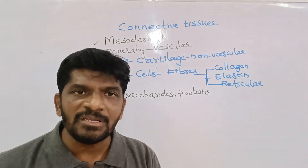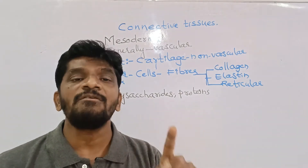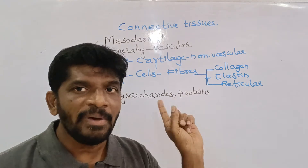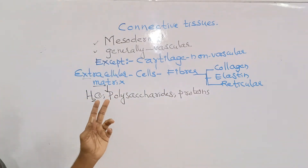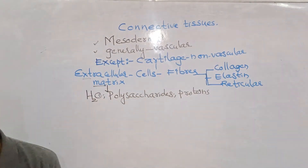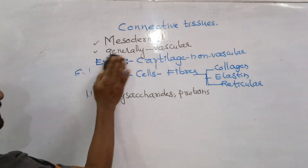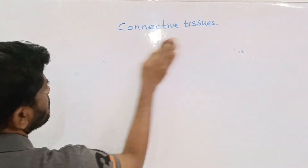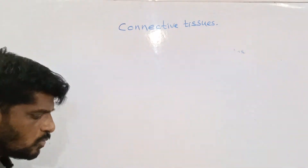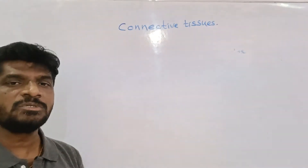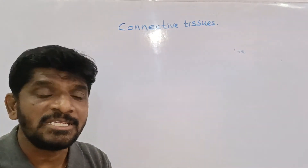Connective tissue means cells, fibers, and the extracellular matrix. Matrix chemical composition is water, polysaccharides, and proteins. There are loose connective tissues, dense connective tissues, and specialized connective tissues.